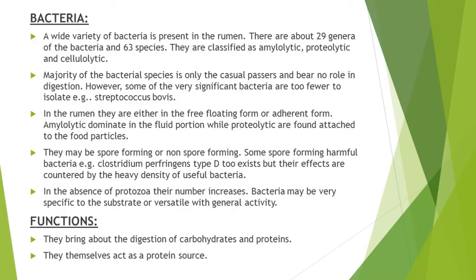In the absence of protozoa, the number of bacteria increases. Bacteria found in the rumen may be spore-forming or non-spore-forming. Some spore-forming bacteria like Clostridium perfringens type D are normally found in the rumen of sheep and goats. Although this bacterium is very harmful, it is present in very small amounts and its effects are countered by the high density of useful bacteria.